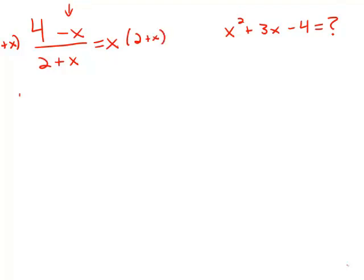On the left side, the denominator cancels, and I get 4 minus x. On the right side, I get x times 2 plus x, and I'm going to distribute that, which gives x squared plus 2x.